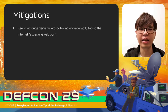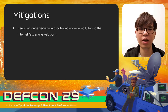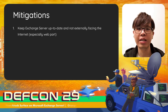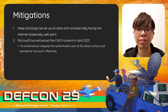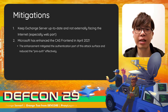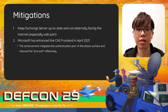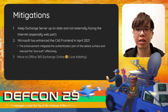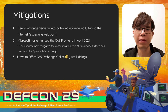The attack surface is still difficult to mitigate with one single action. All you can do is keep your Exchange server up to date, with the support of a firewall or ACL to avoid externally facing the internet. Microsoft has enhanced the CAS architecture in the April patch. The authentication part of this attack surface has been reduced. If you're lazy, please update the April patch at least. And if you're super lazy, maybe give Office 365 a shot.